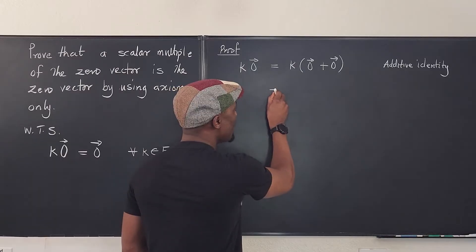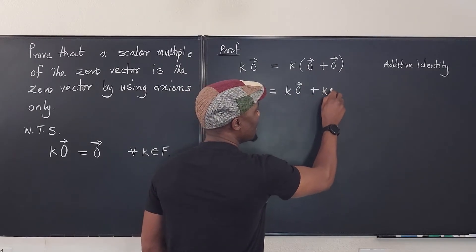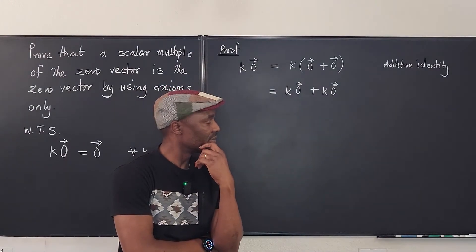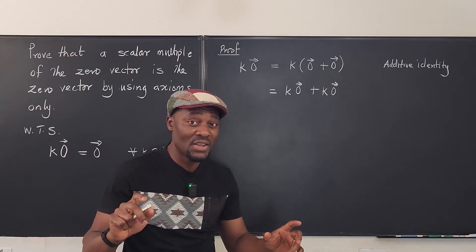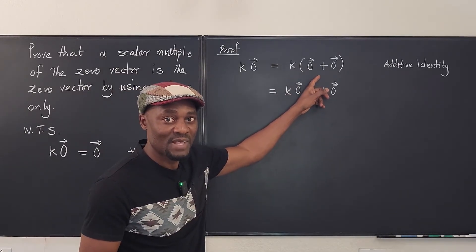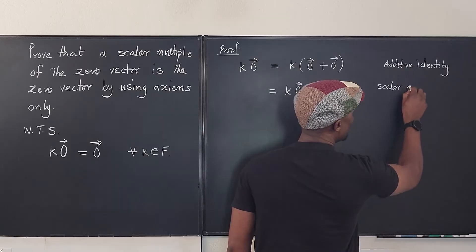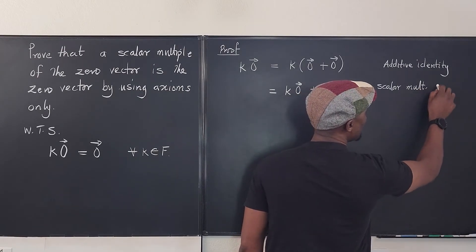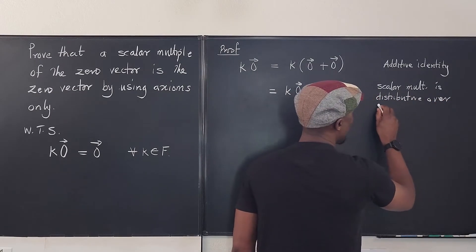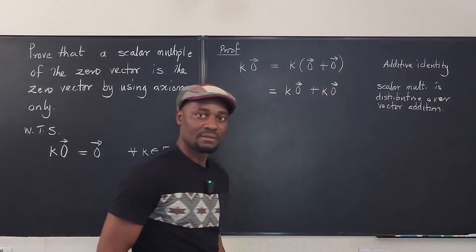Now we know that k times (0⃗ + 0⃗) is the same thing as k·0⃗ + k·0⃗, because we know the distributive property of scalar multiplication over vector addition — that's one of the axioms. So scalar multiplication is distributive over vector addition.